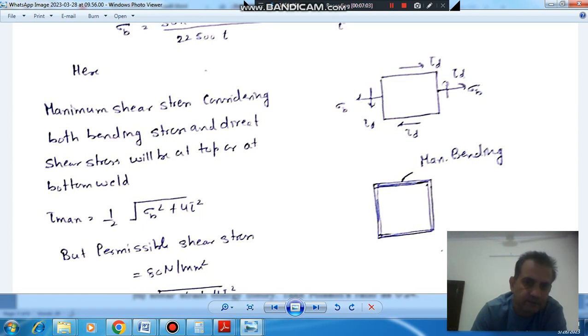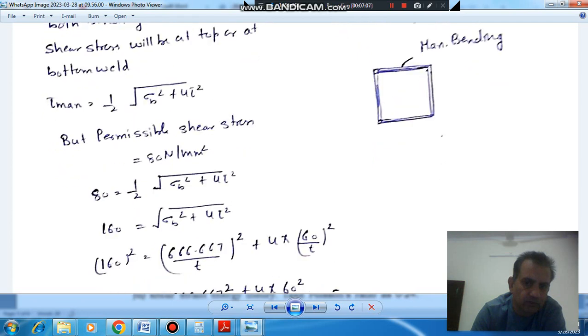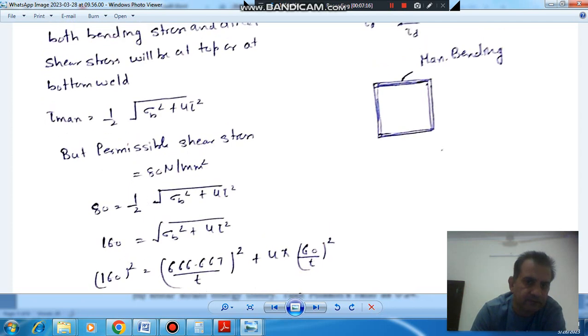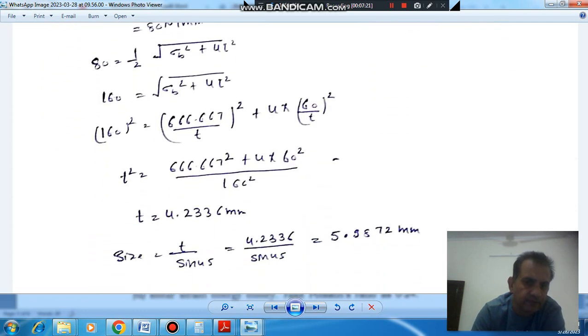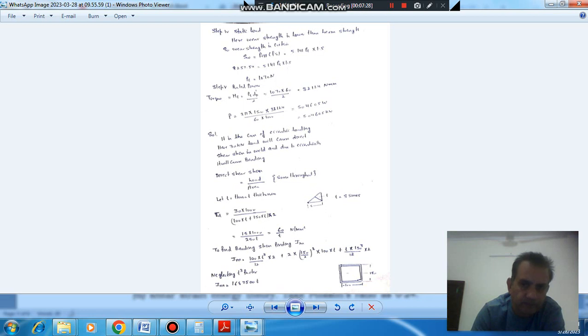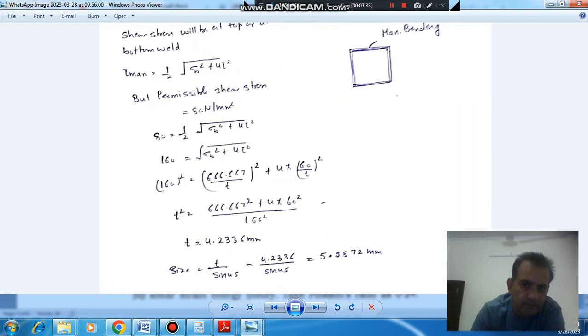So, this will be equal to 6666.67 by T and now we have sigma b, we have tau also. Tau is 60 by T and sigma b is 6666.67 by T. So, from this equation, we can find out T. So, T comes out as 4.2336 and size of weld will be T by sin 45. So, there will be 5.9875.